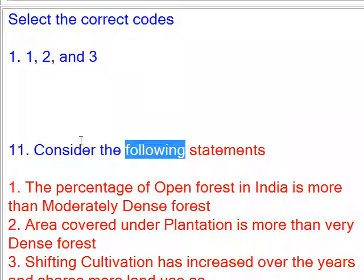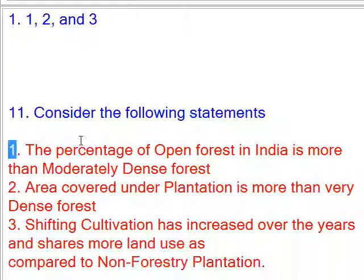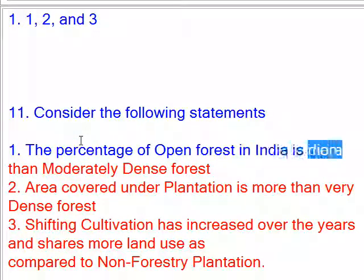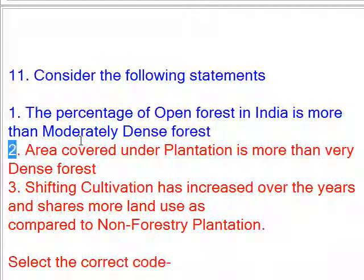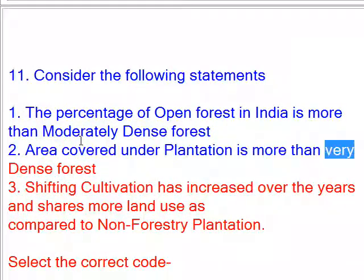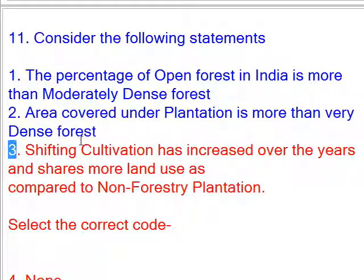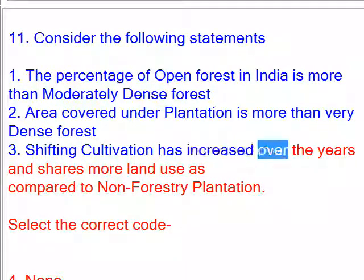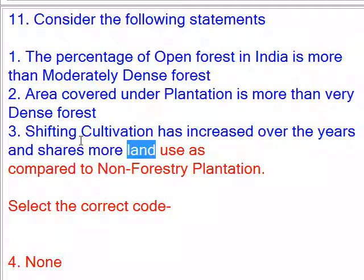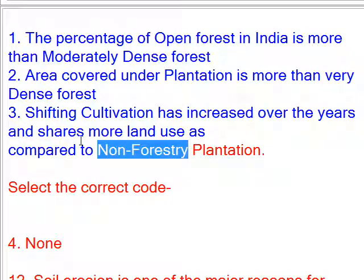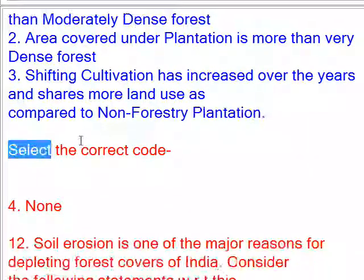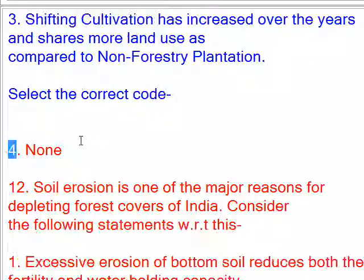Consider the following statements: 1. The percentage of open forest in India is more than moderately dense forest. 2. Area covered under plantation is more than very dense forest. 3. Shifting cultivation has increased over the years and shares more land use as compared to non-forestry plantation. Select the correct code. Answer: None.